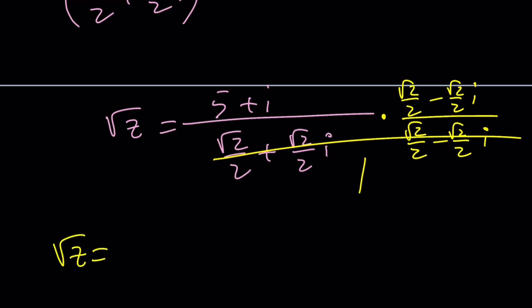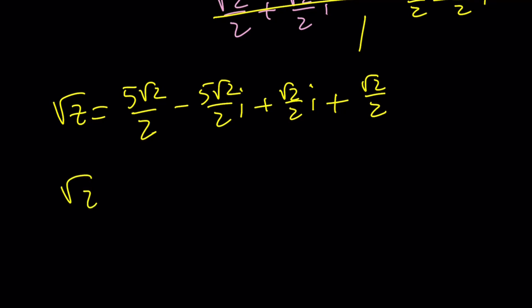So the square root of z is just going to be this product. Let's go ahead and multiply. We get 5 root 2 over 2 minus 5 root 2 over 2i, plus root 2 over 2i, and then plus i squared is negative 1 root 2 over 2. Let's simplify. Square root of z equals 5 root 2 over 2 plus 1 root 2 over 2 is 6 root 2 over 2, which is 3 root 2. And then this is negative 5 plus 1, negative 4 root 2 over 2i, which is negative 2 root 2i.